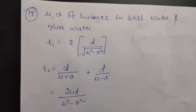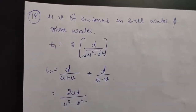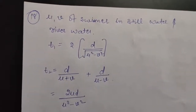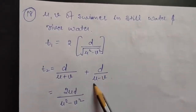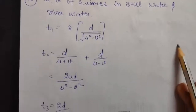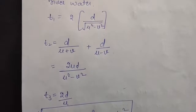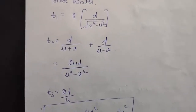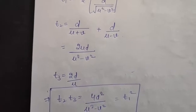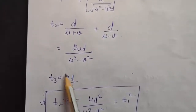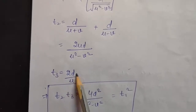t1 is the time taken by the swimmer to go to and fro for a distance d, so total distance is 2d and the resultant speed is √(u² − v²). This gives t1 = 2d / √(u² − v²). For t2, the time upstream is d/(u + v) and downstream is d/(u − v). Solving, you get t2 = 2ud / (u² − v²). And t3 is the time to swim 2d in still water, so t3 = 2d/u.